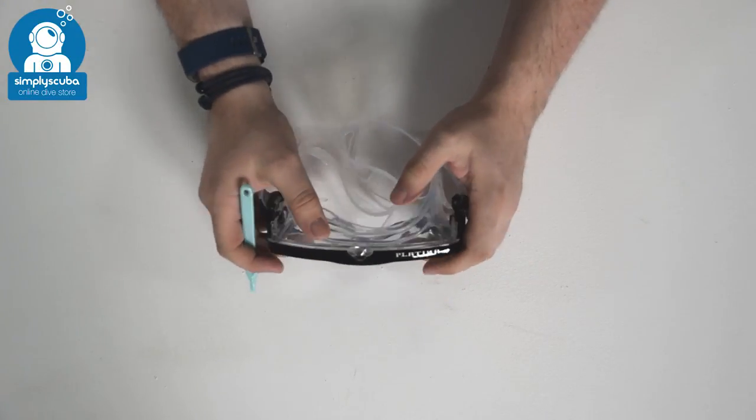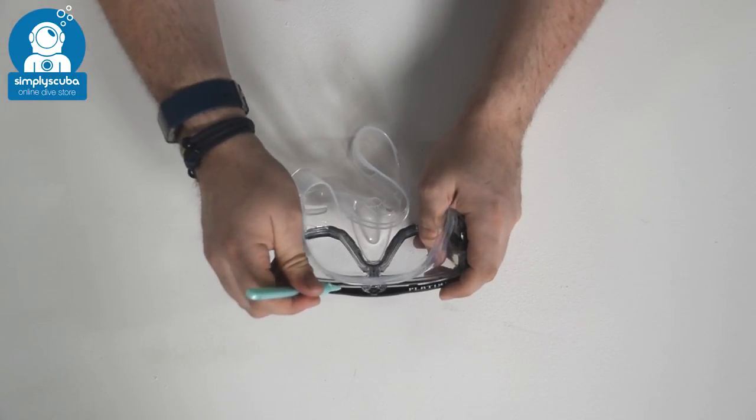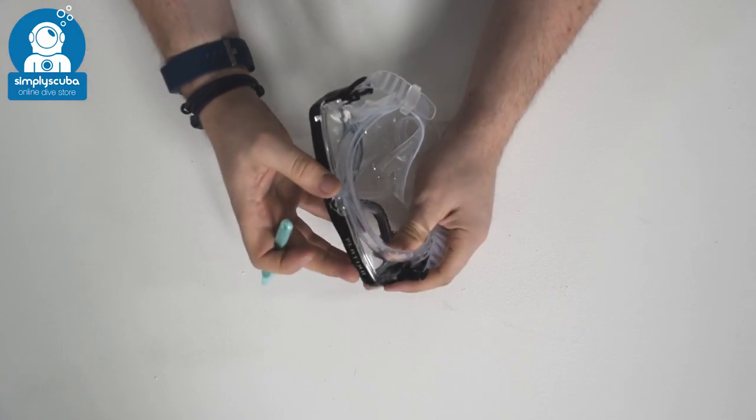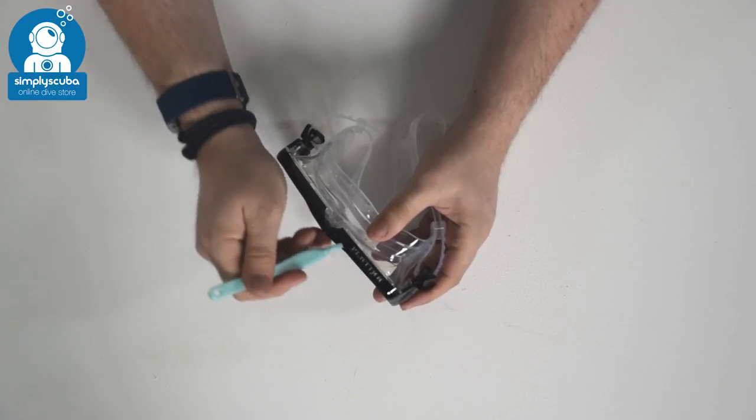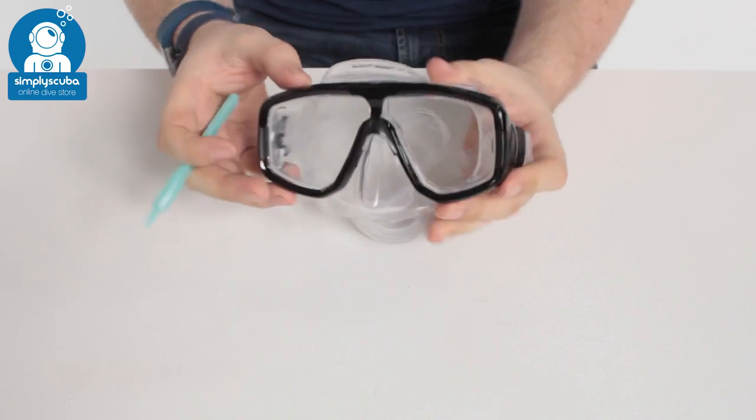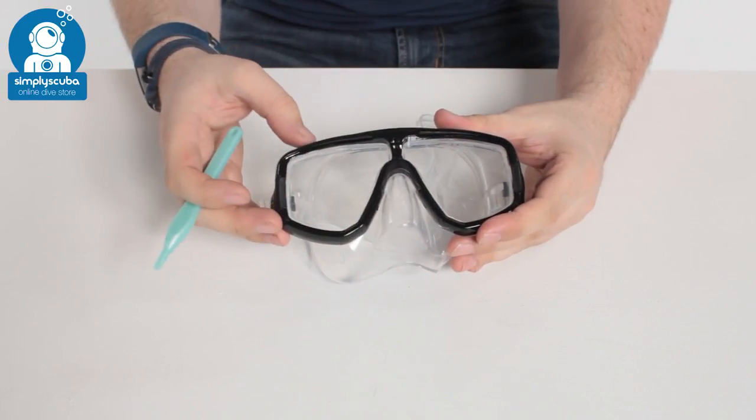Now all the way around the Platina you have these little recesses and these are sort of weak points to remove the frame. What we're trying to do is remove the black frame off of the black internal frame, and that's how we're going to get the lenses out.